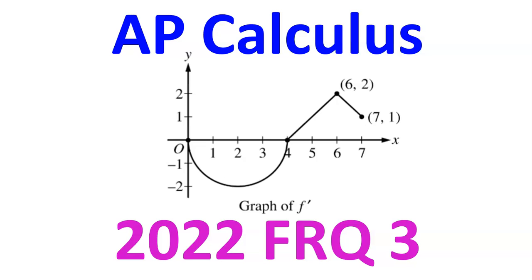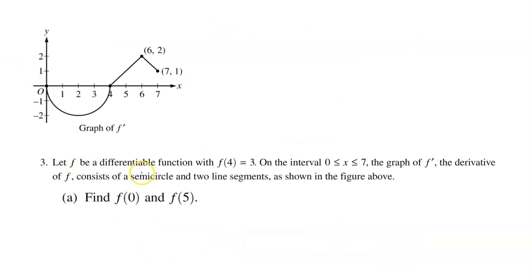In this video, I will walk you through free response question number 3 from the 2022 AP Calculus exam. Let f be a differentiable function with f at 4 equal to 3. On the interval from 0 to 7, the graph of f prime, the derivative of f, consists of a semicircle and two line segments as shown in the figure above.